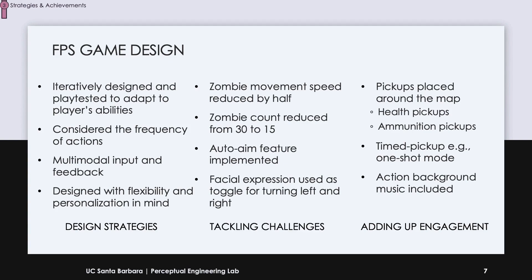A series of playtests and iterations revealed some challenges that needed to be addressed. Cutting zombie movement speed and number in half, and adding auto-aiming for shooting, are some of the many configurations we made. Additionally, for turning the character left and right, we employed facial expressions to operate as a joystick tilt. To make the game more exciting, we placed health and ammo pickups around the map and added timed pickups so that zombies get killed after one shot instead of seven. We also used action background music to create tension.